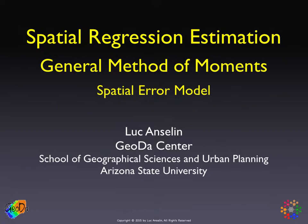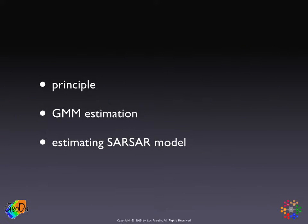In this fifth set of slides we're going to look at the estimation of the parameters in the spatial error model by means of generalized method of moments, the GMM approach. The principle is very much the same as what we already discussed for maximum likelihood estimation and spatially weighted squares, but we'll repeat it here for completeness. Then we'll move on to the actual GMM estimation, which is quite dense and involves a lot of mathematical equations, but the principle is actually quite straightforward. We'll focus on that and the equations are provided as background.